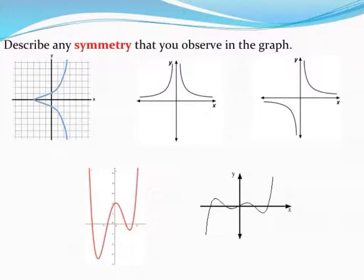For example, in this first graph here, I could imagine if I folded the graph along this dashed line, the graph would line up with itself. And so what we'd say is this graph shows x-axis symmetry, because the x-axis serves as our line of symmetry.